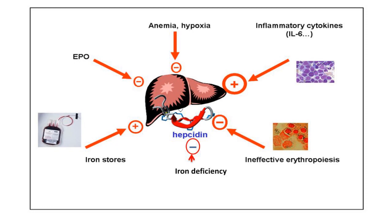The main factors regulating hepcidin are the iron state and inflammation. Iron excess and inflammation are the main factors increasing hepcidin level. Hepcidin is one of the acute phase proteins, which increases with inflammation. The main factor decreasing hepcidin is iron deficiency, as well as anemia and hypoxia. Erythropoietin and erythropoiesis increase demand for iron and therefore must decrease hepcidin level to make iron available, as does ineffective erythropoiesis.